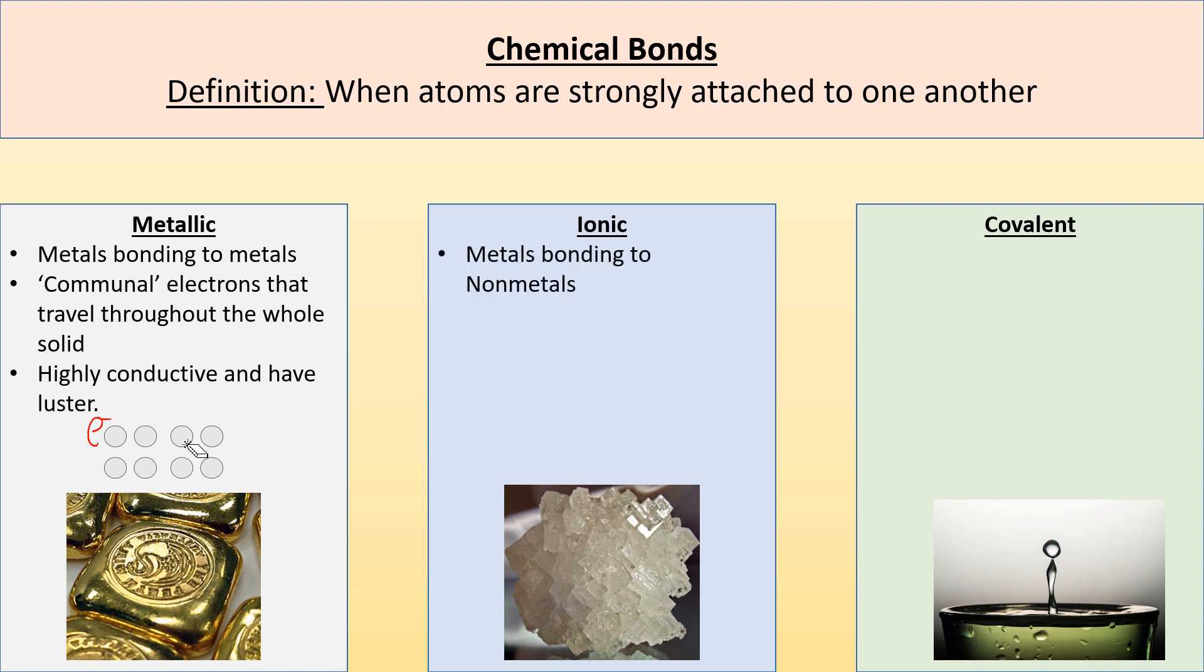So for ionic solids, that occurs when we have metals bonding to nonmetals. Electrons are being transferred. So the example is if I had sodium that has one valence electron and chlorine that has seven, what ends up happening is one of those electrons from sodium is being transferred to the chlorine. So chlorine ends up with eight and sodium loses one.